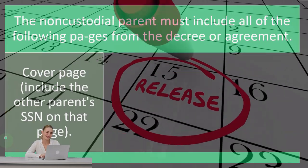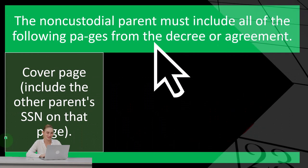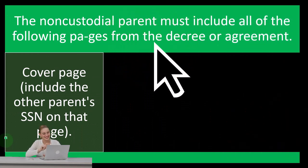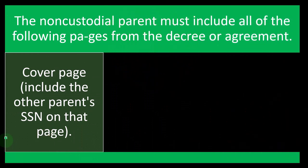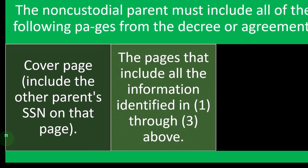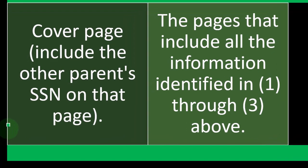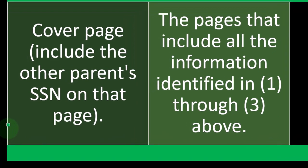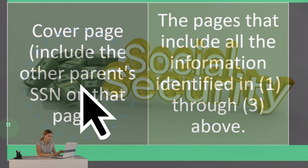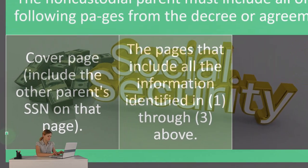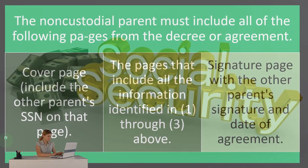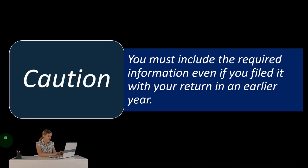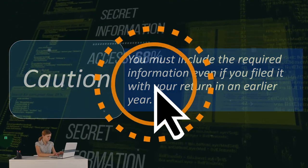The non-custodial parent must include all of the following pages from the decree or agreement: the cover page — including the other parent's Social Security number on that page — the pages that include all the information identified in conditions one through three above, and the signature page with the other parent's signature and date of agreement.